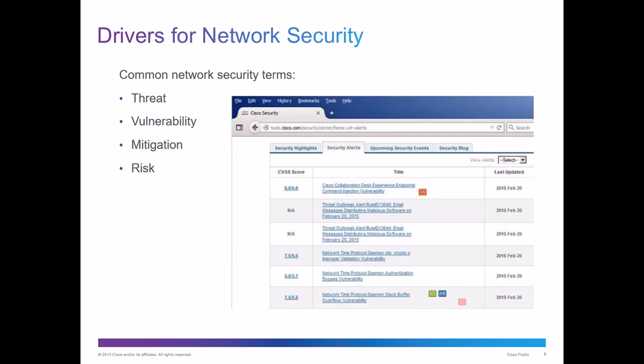The common network security terms we are going to be concerned with are: a threat — somebody that has software or wants to attack your network. That threat looks for a vulnerability. A vulnerability is a weakness that somebody can exploit. A good example of vulnerability is if you have your car window open with the keys in it — that's a vulnerability that somebody can get in your car and take it. The threat is somebody who can take your car. The risk could be that you lose your car.